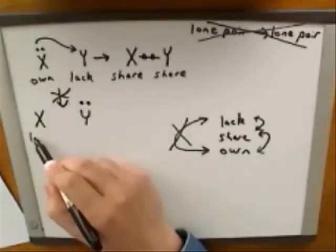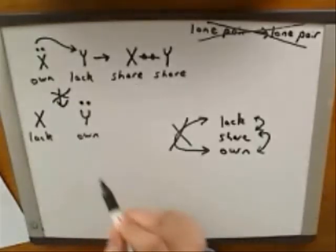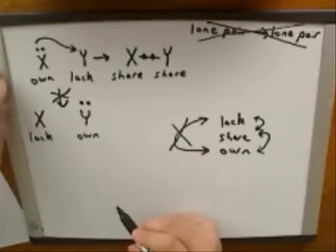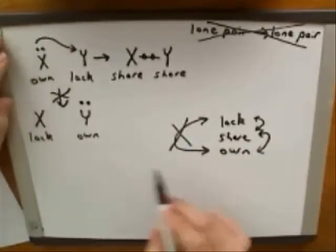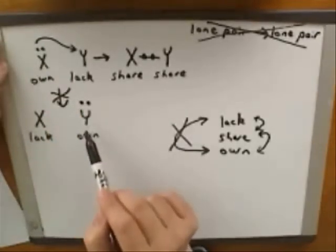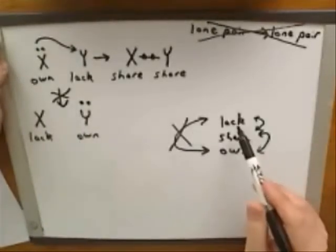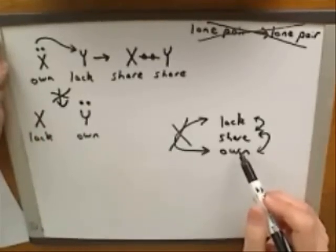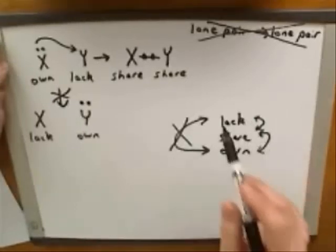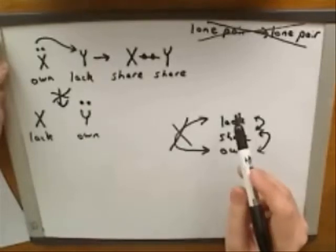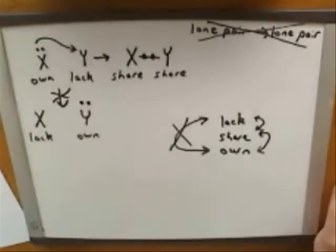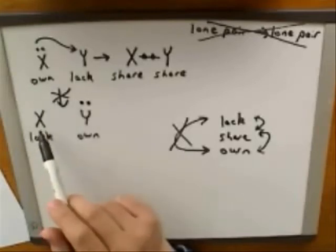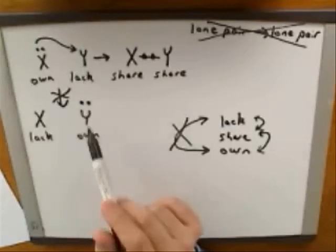If we had incorrectly formed a lone pair on Y, then X would completely lack any connection to the electrons and Y would completely own them — both of those are unallowable transitions. We can't take a pair that X owns and turn it into one that X lacks completely; that's too big a jump. Similarly, we can't take a pair completely lacked by Y and turn it into one owned by Y. In this diagram, you can only move by one step: bottom to middle, middle to bottom, top to middle, or middle to top — never top to bottom or bottom to top. This is another explanation for why lone pair to lone pair transitions are forbidden.